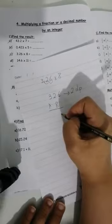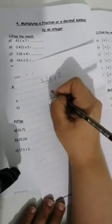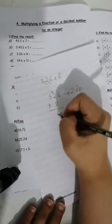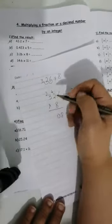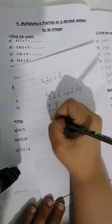8 times 6, 48. 8 down, 4 up. 8 times 2, 16 plus 4, 20. 0 down, 2 up. 8 times 3, 24 plus 2, 26.